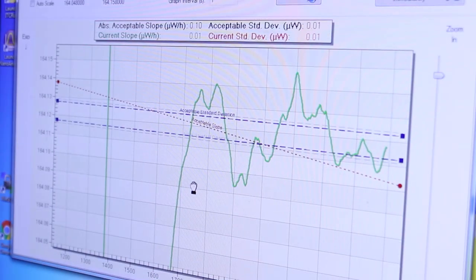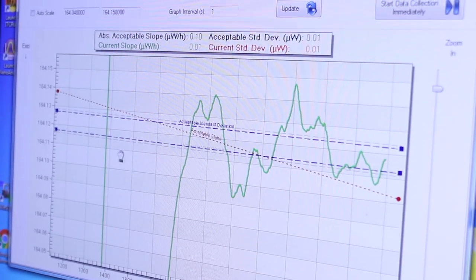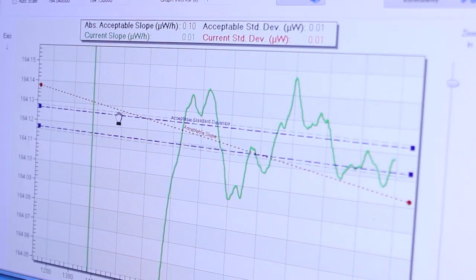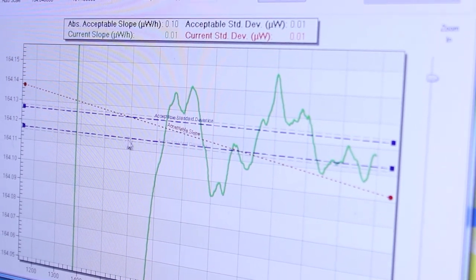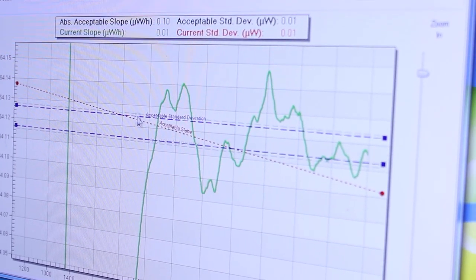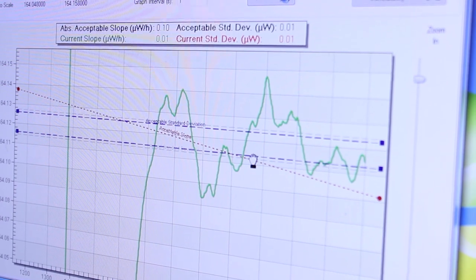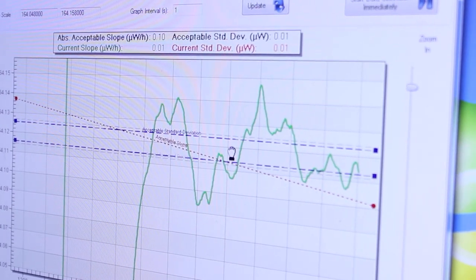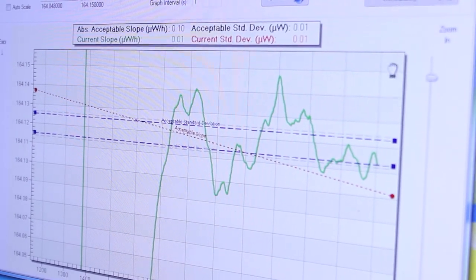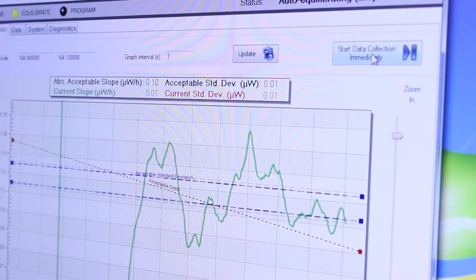If we zoom in we can see now that the gray line has almost reached the blue line in terms of the acceptable standard deviation. We're going to in this case say that it's close enough so now we can go to start data collection immediately.